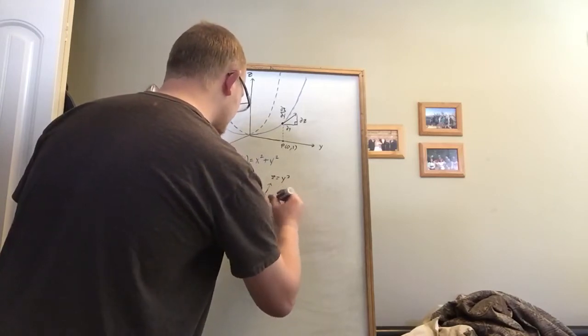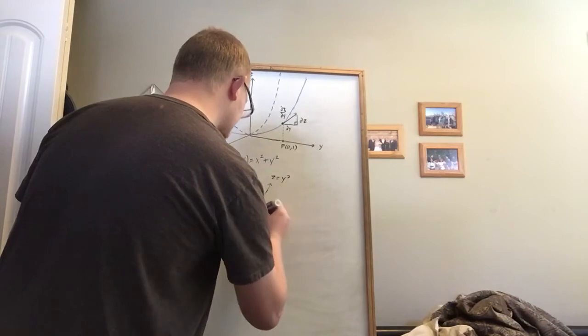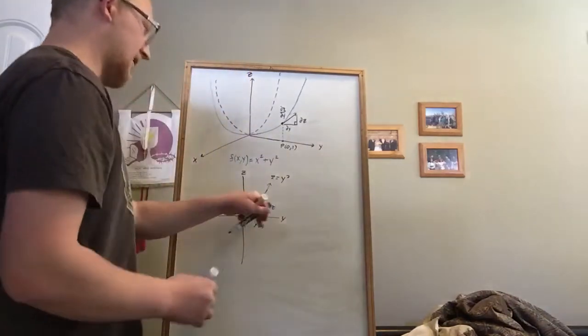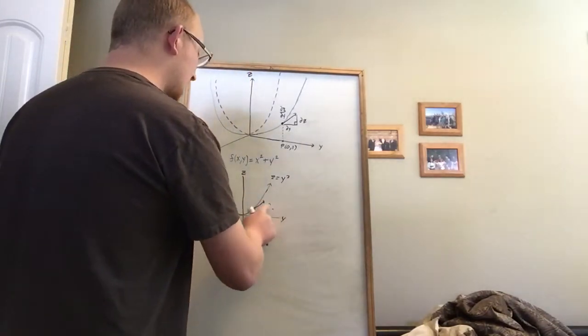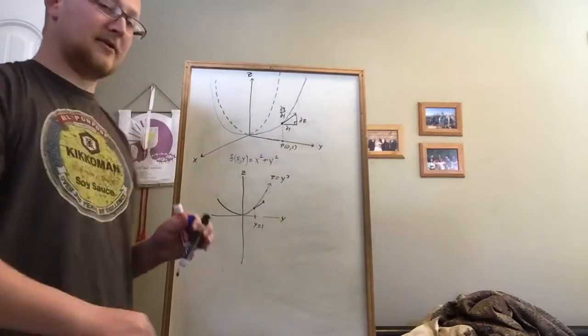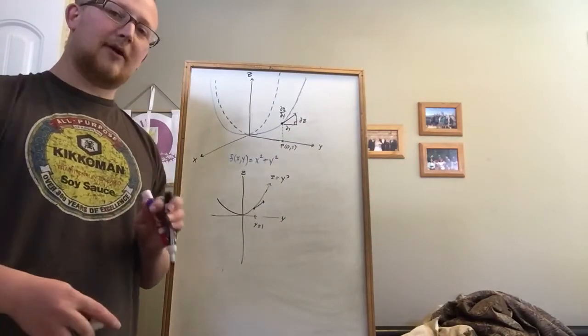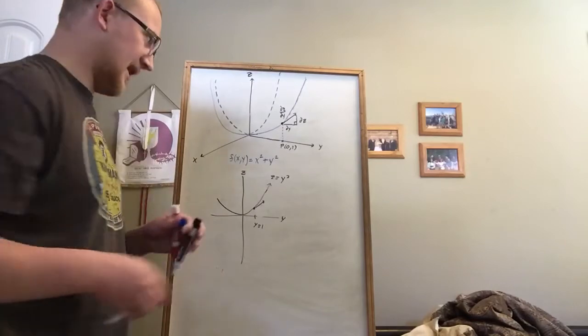We would say, well, we're trying to find its rise over its run. What's its change in y to its change in z? And we were trying to find this slope here, the tangent.